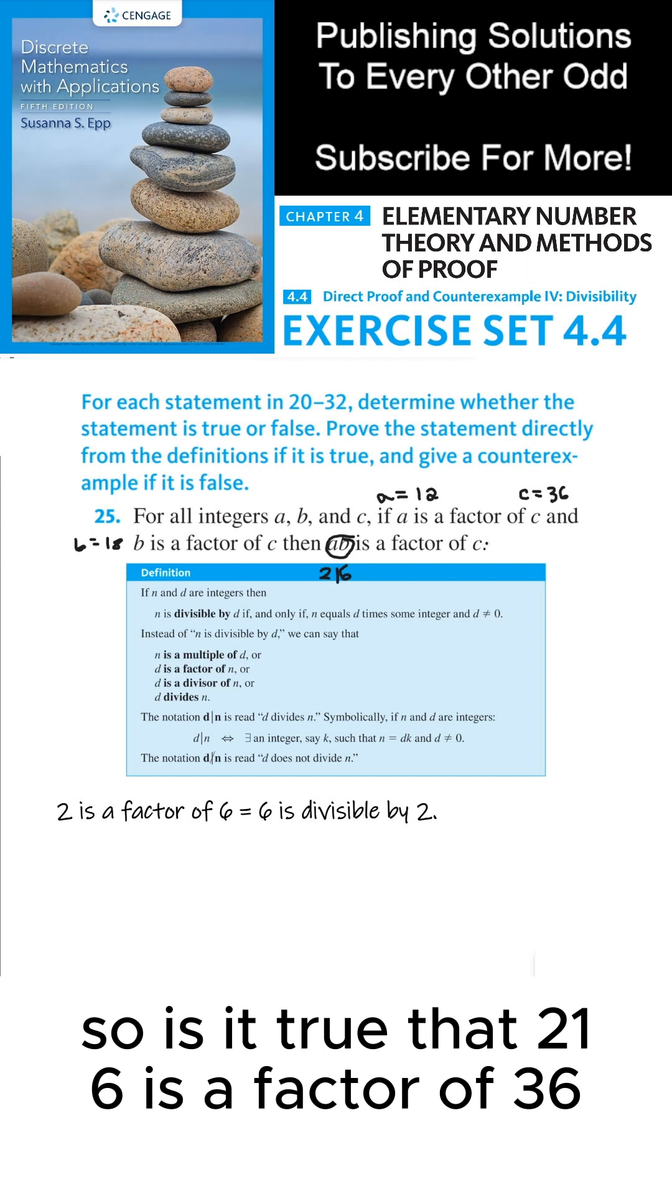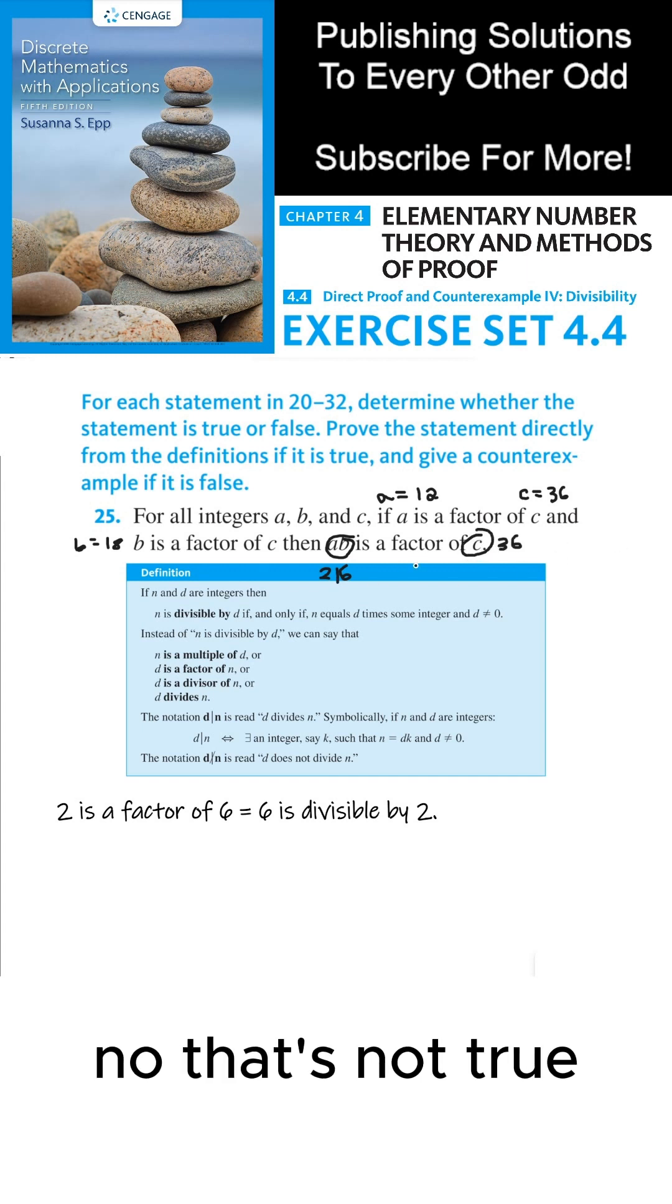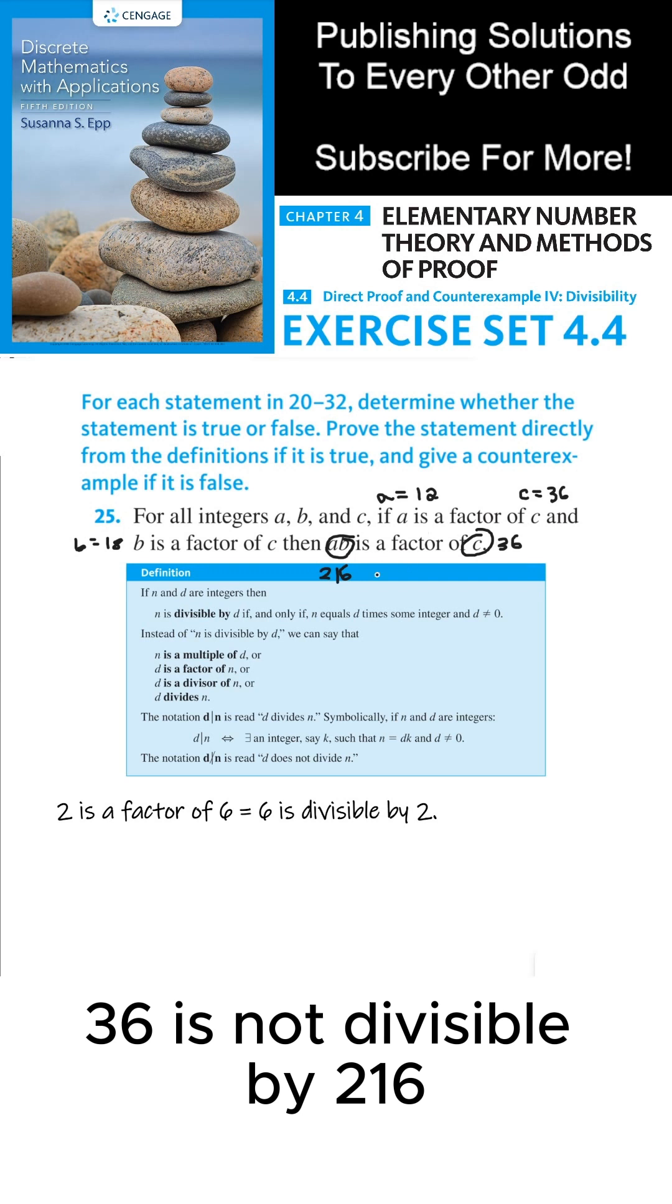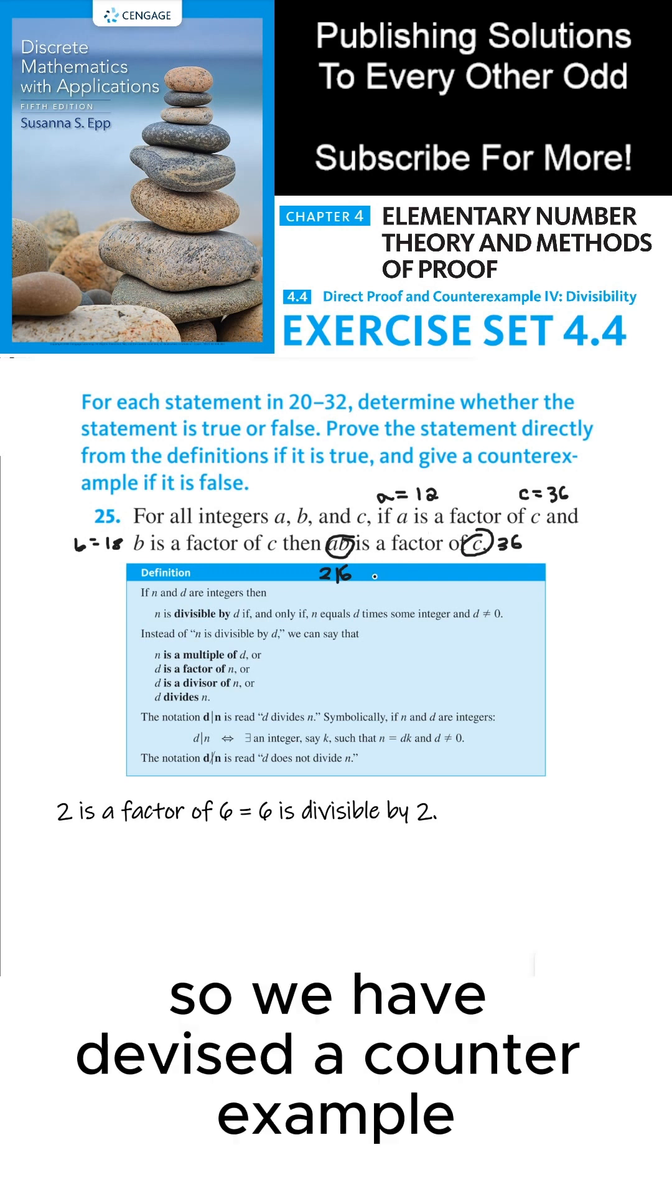So is it true that 216 is a factor of 36? No, that's not true. 36 is not divisible by 216. So we have devised a counterexample.